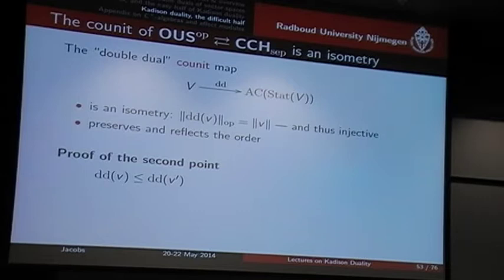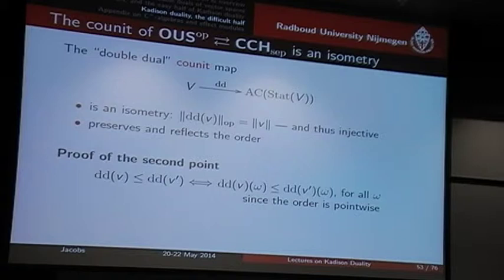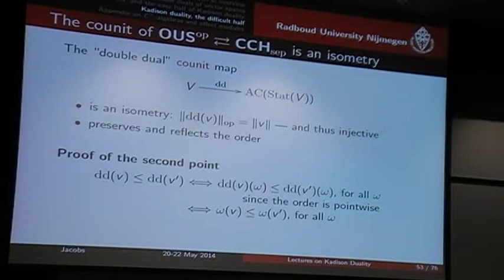So, if the double dual of v is less than the double dual of v prime, what does this mean? We're talking about the pointwise order. That means that for each state, this order relation must hold. But if we fill in what this means, this simply says that omega of v is less than omega of v prime for each state. We saw on the previous slide that this precisely means that v is less than or equal to v prime. So indeed, I have preservation and reflection.